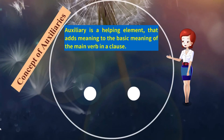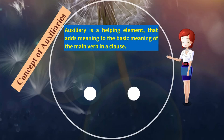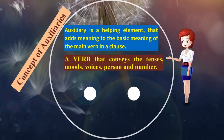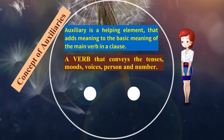An auxiliary is a helping element that adds meaning to the basic meaning of the main verb in a clause. For example, 'He brings me a bag' — the main verb is 'brings'. It is a verb that conveys the tenses, allowing us to identify the tenses, the moods, the voices — that is, active voice or passive voice — or the person or number in a particular sentence.